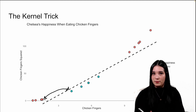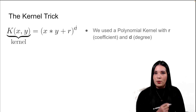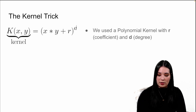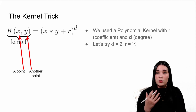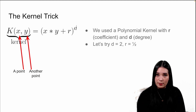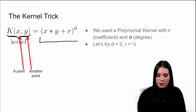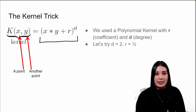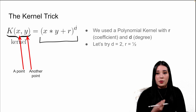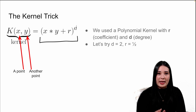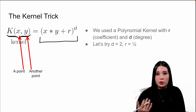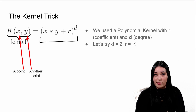What the kernel trick says is that we can calculate the relationship between two data points without needing to do so explicitly. We need to use a kernel. For example, in the chicken example, I used something called a polynomial kernel. This kernel says that the relationship between two data points is whatever this value equals. Here, x and y are our data points, r is the coefficient and d is the degree, which are both hyperparameters that we'll often choose via some type of hyperparameter tuning.